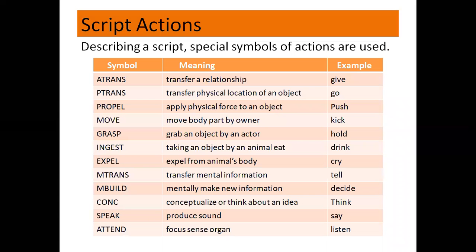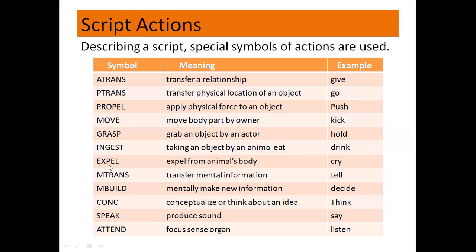Recalling from Conceptual Dependency, the same set of action symbols are used in scripts. A-trans is transfer of a relationship, meaning give. P-trans is physical location of an object being transferred, meaning go. Propel is applying a physical force to an object. Move is moving a body part by its owner. Grasp is grabbing an object by an actor. Ingest is taking an object into an animal's body, such as eat. Expel is expelling from an animal's body. M-trans is transferring mental information. M-build is mentally making new information. Speak is producing sound. Attend means focusing a sense organ — that is, listen or see.